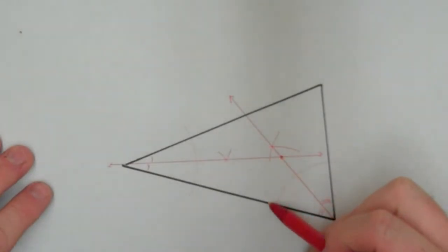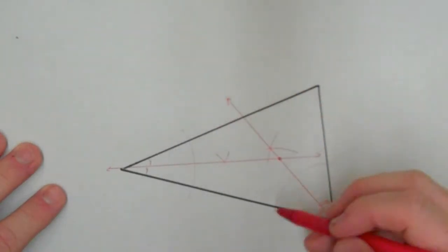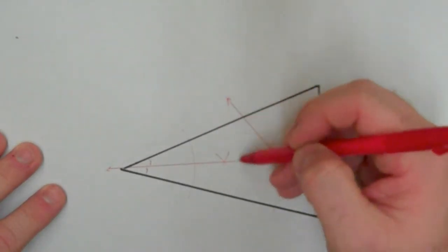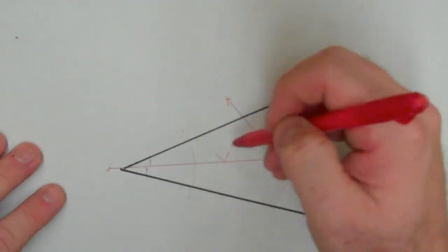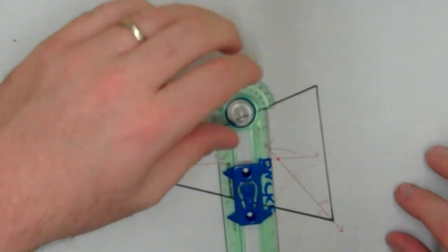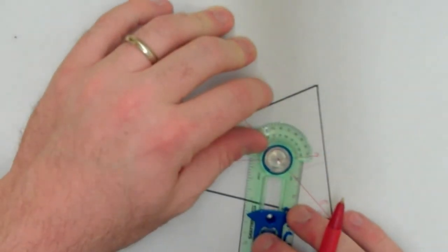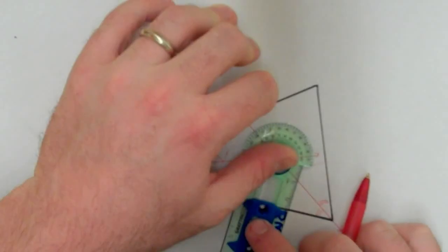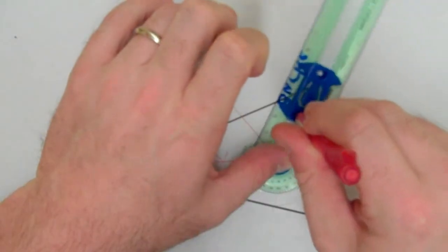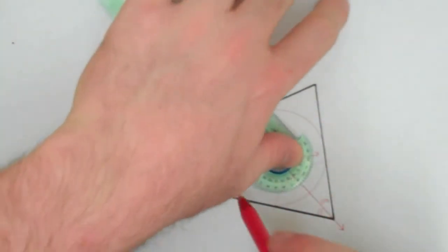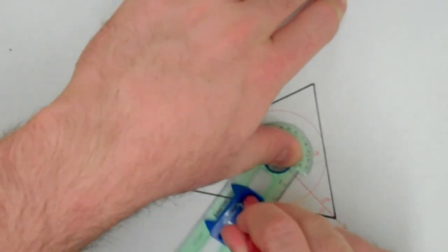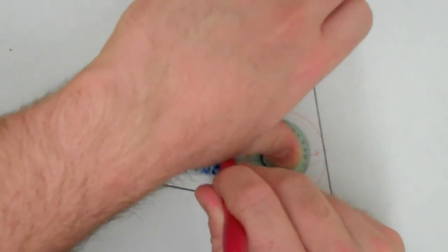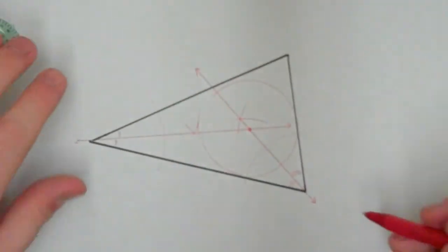I should be able to put the point of my compass right here, open it up until it intersects one of the sides. And then if I draw a circle, it should intersect each side at just one point. In other words, it shouldn't cross outside the triangle. It should stay completely inside the triangle. So let's see how I did here. Point of my compass on the center. Open it up so it's just on the line right about there.